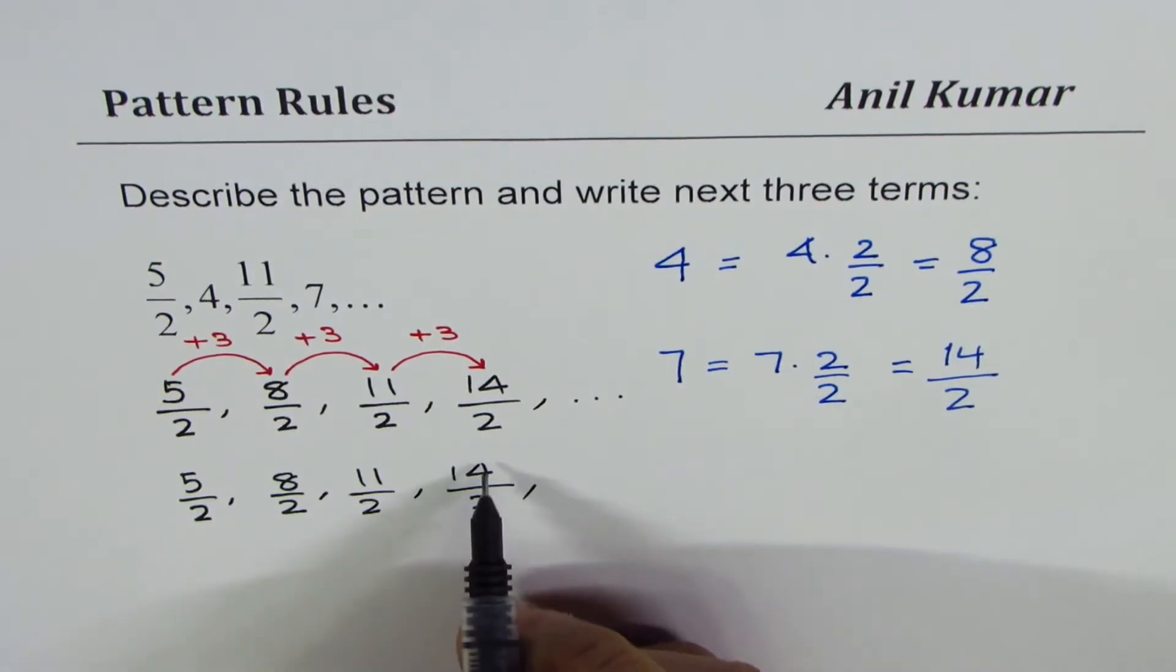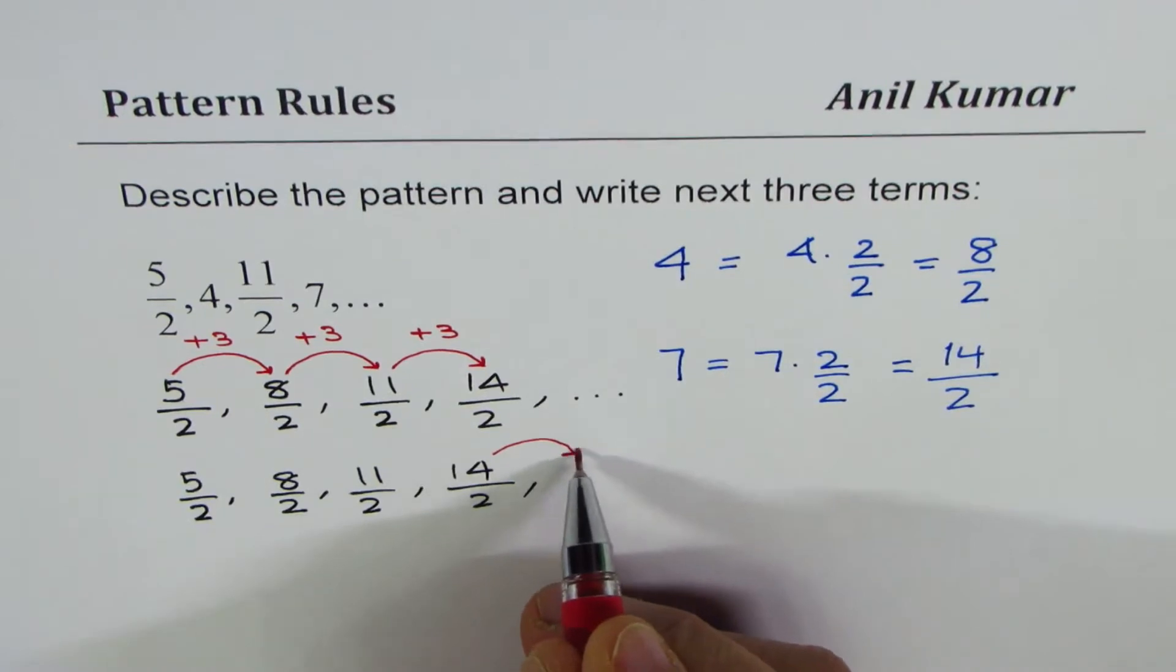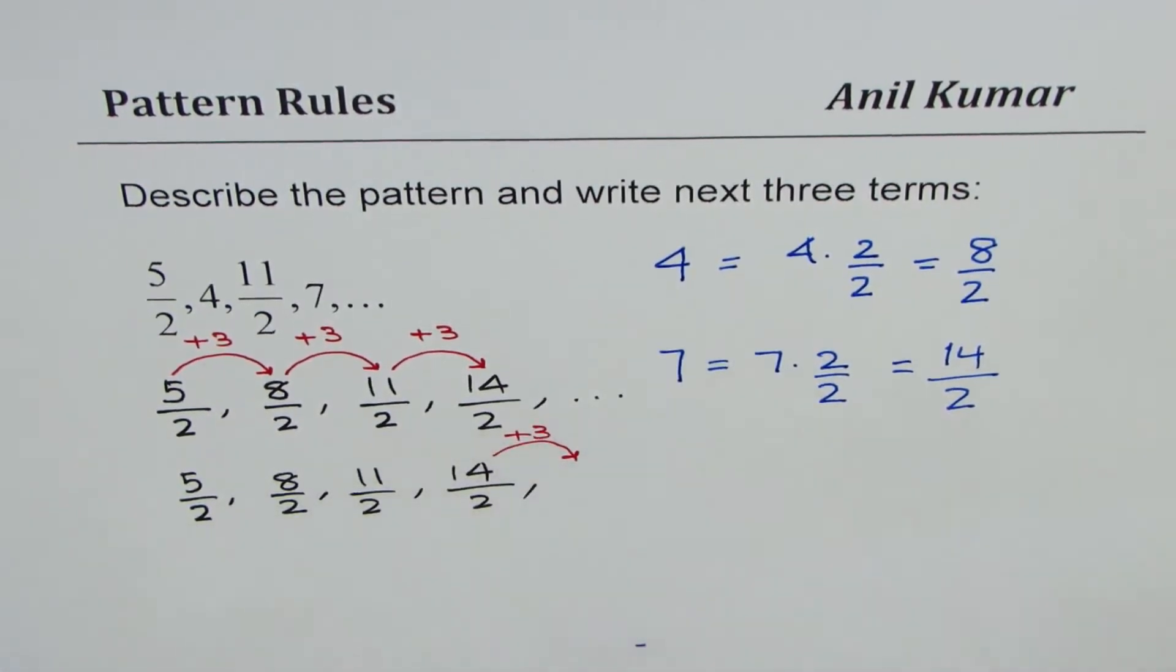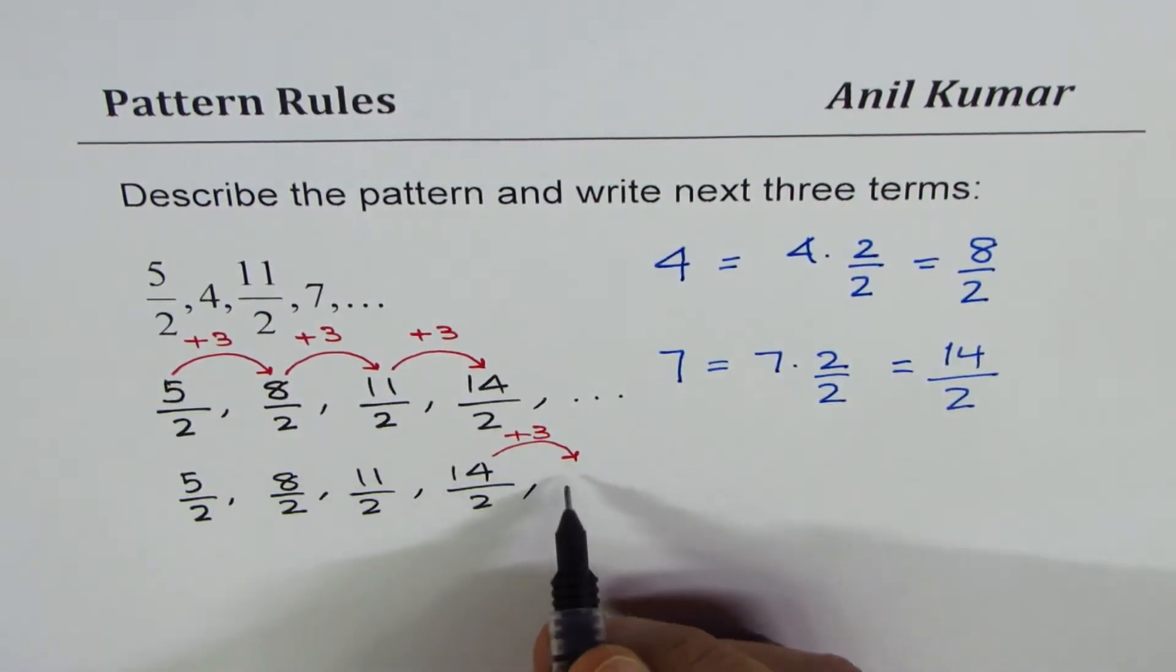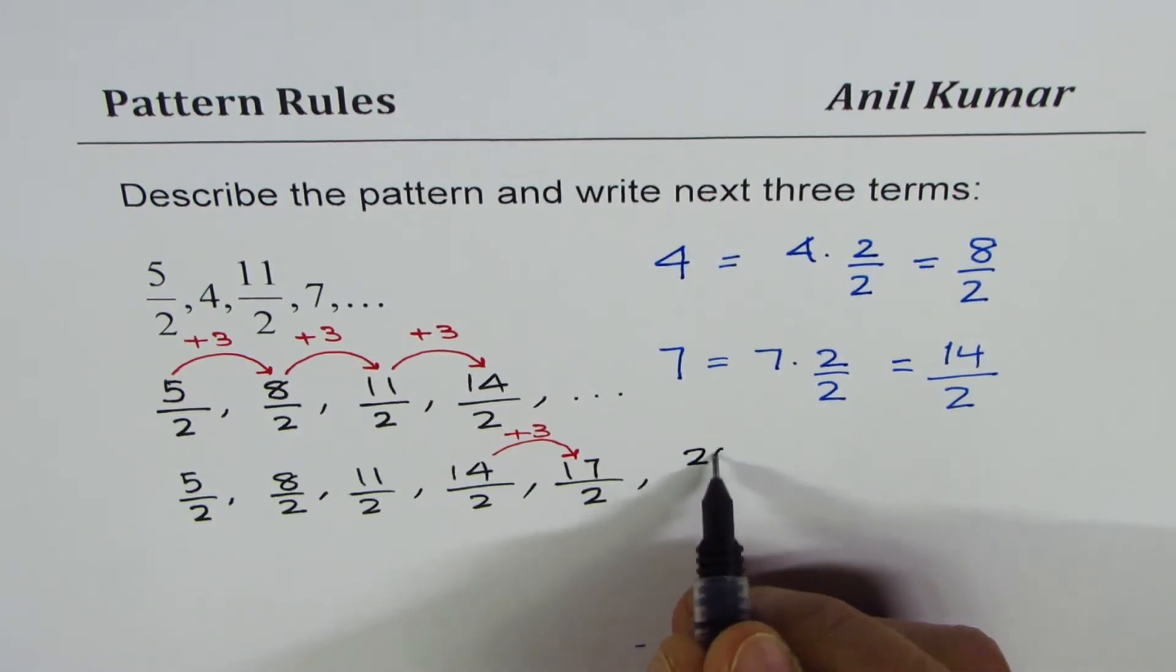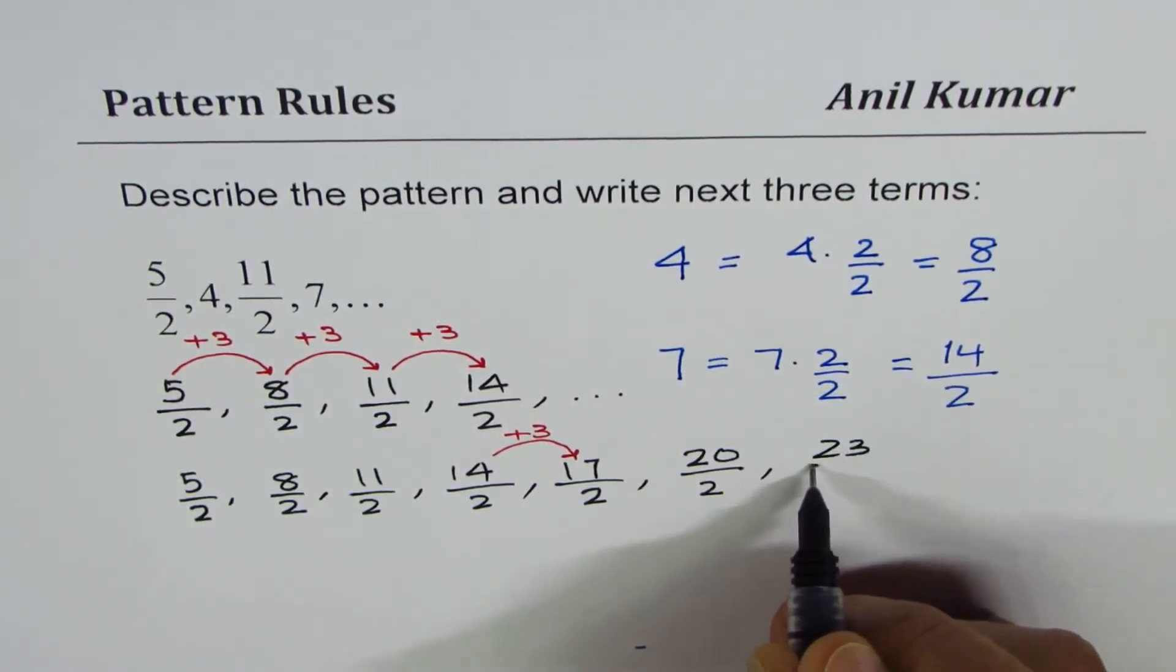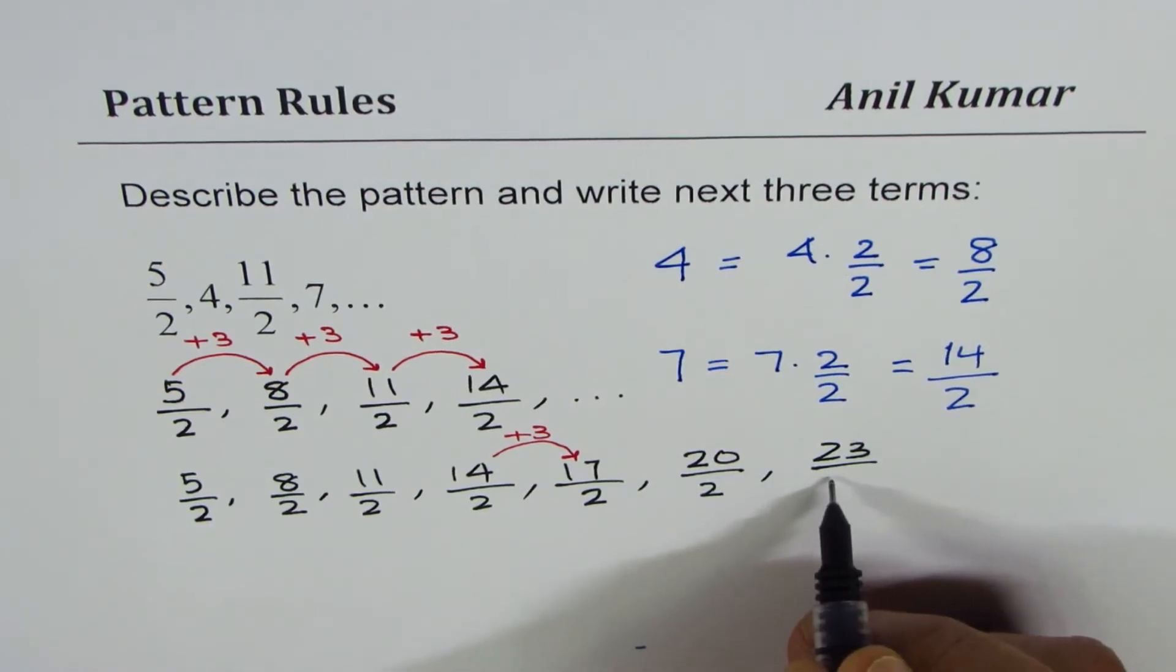Next term should be 14 plus 3 in the numerator. So what we get here is 14 plus 3 is 17 with same denominator too. 17 plus 3 is 20. So 20 over 2. And then we have 23 over 2. So that makes it 3 more terms.